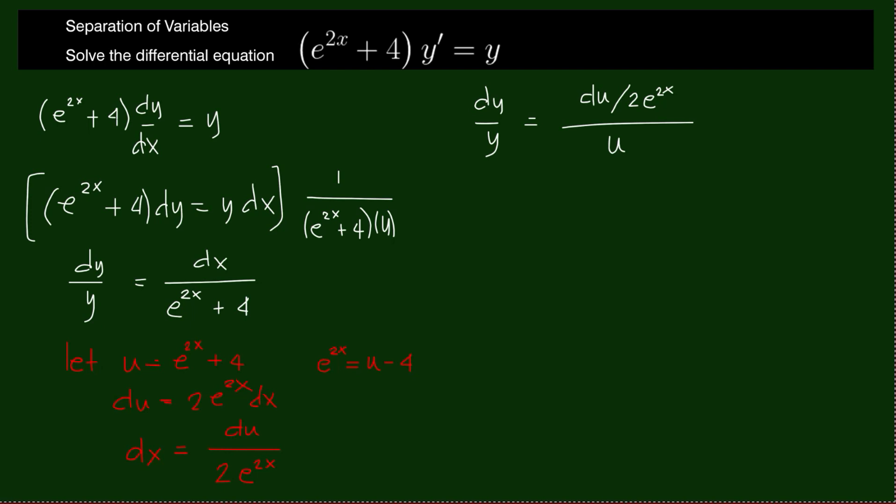So now our equation becomes dy over y equals du over 2 times u minus 4 times u.